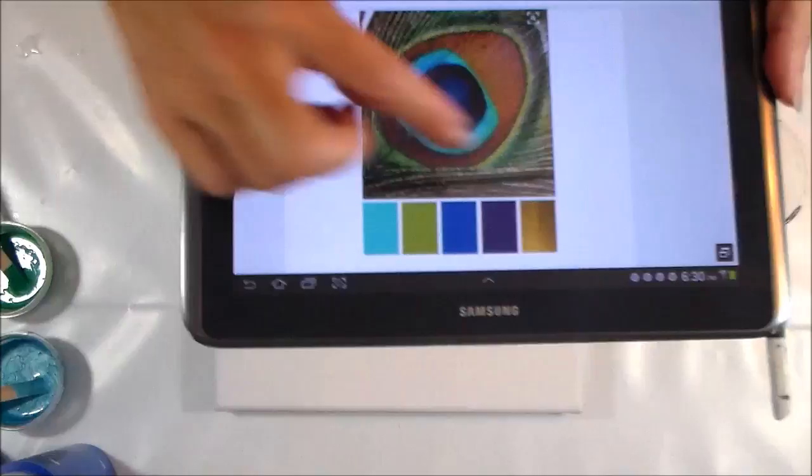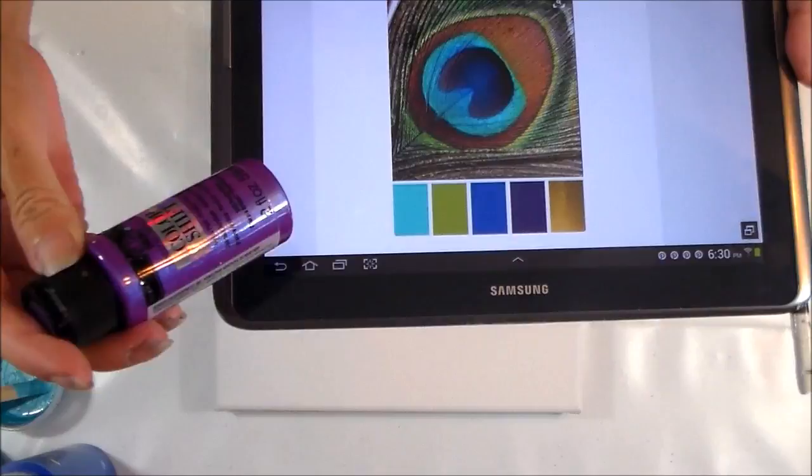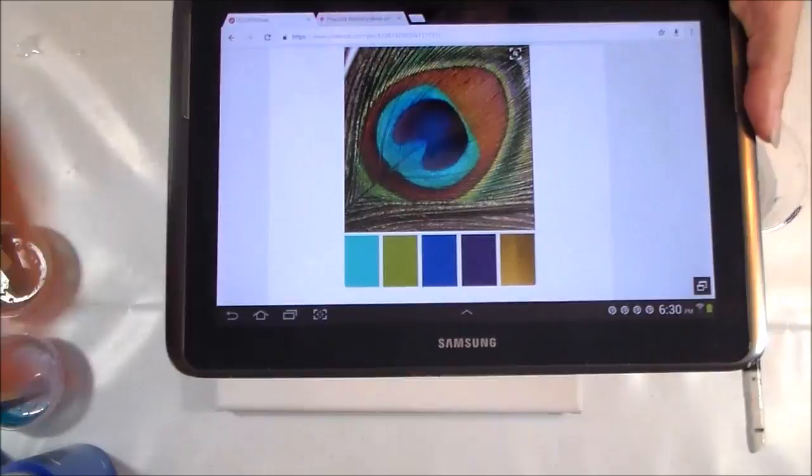Then we've got this kind of plum color here, and for that one I'm using the FolkArt Color Shift paints in Purple Flash because it's going to be nice and shimmery and iridescent.